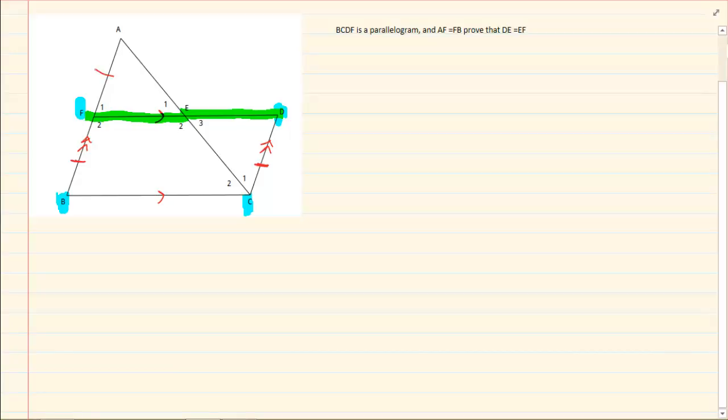Now, in geometry, they give you nothing for nothing. If they gave us that AF is equal to FB, then that means we are going to use it. Now, if you look at the triangle, this triangle here, AEF and this triangle here, which is EDC, you would have that F1 is equal to D. Why?